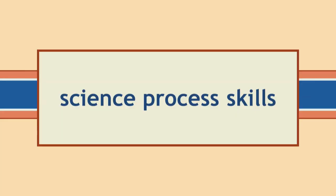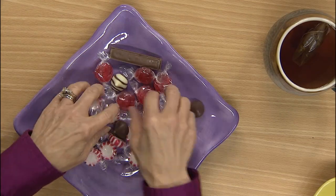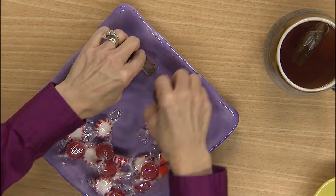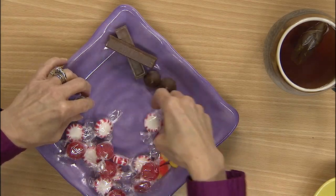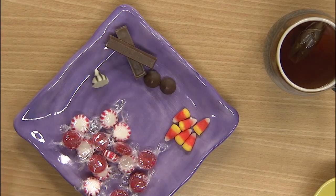Now, in the last lesson, we were talking about science process skills. Do you remember what science process skills are? Well, they are the skills that scientists use to gather and use information. So, I want you to think about that as I use this candy to do a little science. I can separate this candy in a few different ways. First of all, I can separate the candy by color. I can put the red candy with red here, and the brown candy here, and the orange and yellow candy here, and I might have one that doesn't quite fit. So, I can separate by color.